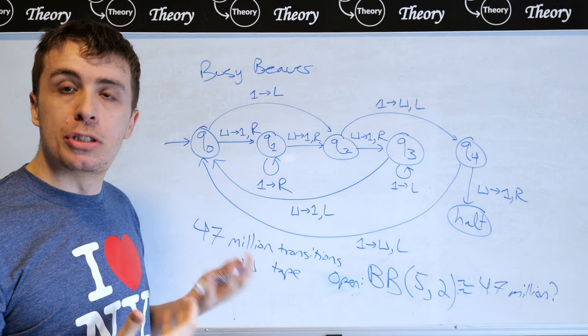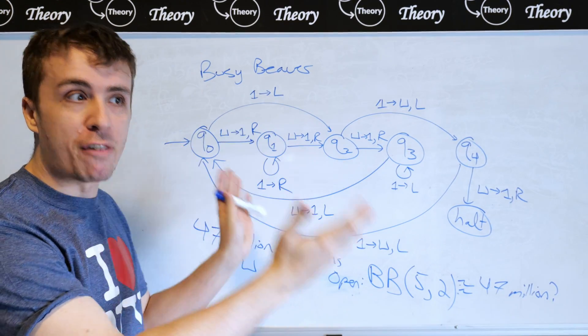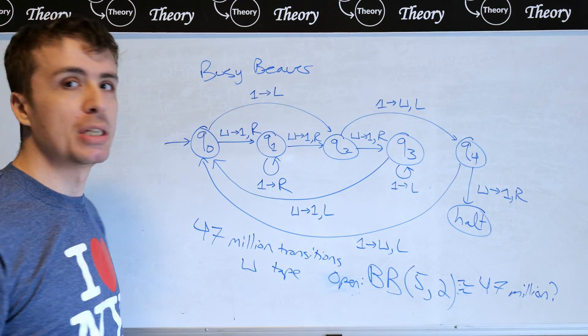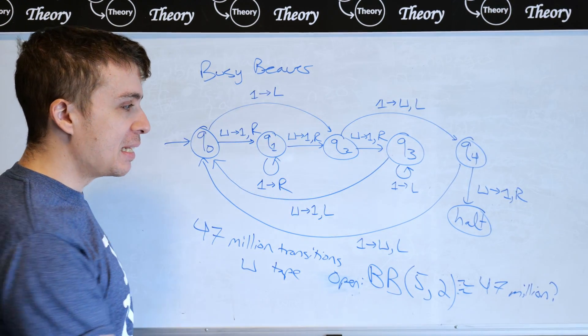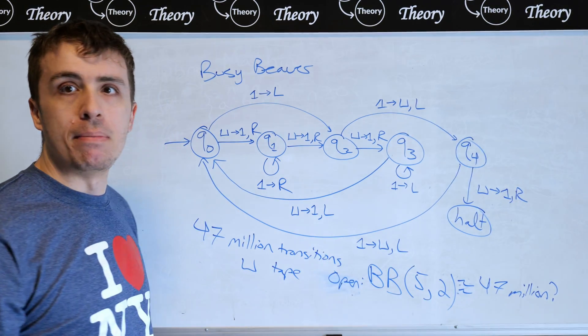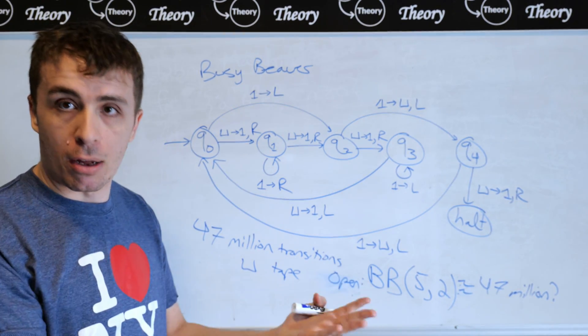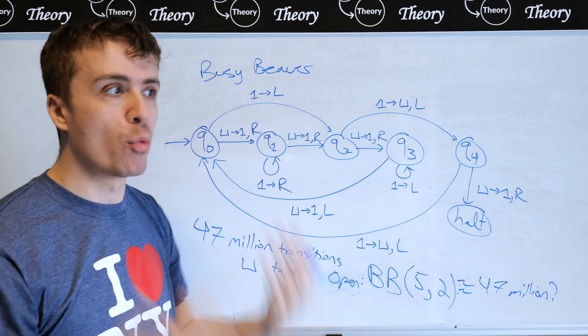And how do you actually prove it? All you do is you go through all Turing machines with five states and two tape symbols, and just see how long could they possibly run. So the ones that take less than 47 million transitions, they obviously stop, so you can just throw them away.